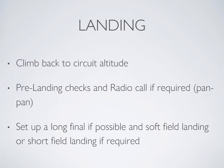Once you've completed your low pass, retract flaps and climb back up to circuit altitude — 1,000 feet AGL. On your downwind, do your pre-landing checks as well as a radio call if required depending on your scenario, such as a pan-pan call or passenger brief. Then you can continue on downwind a little further to set yourself up on a long final, as you'll be doing a simulated soft field landing on your selected field.